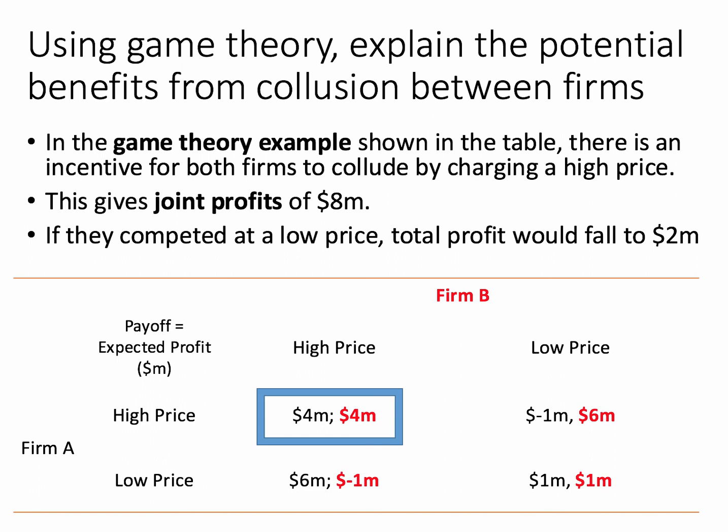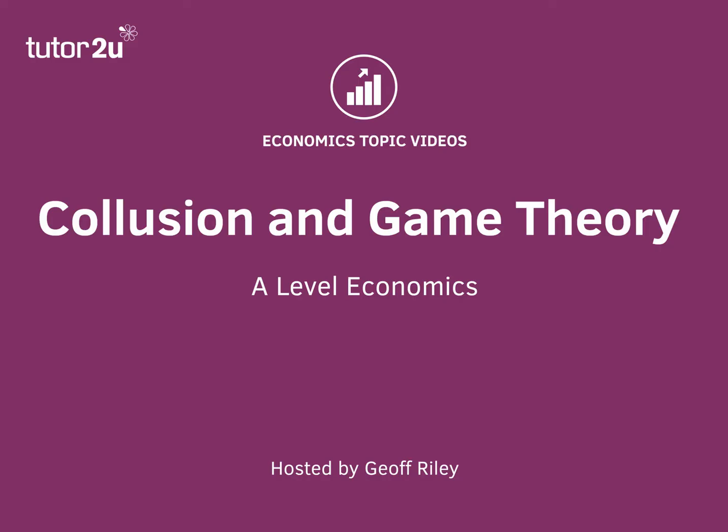But this is a symmetrical situation — the same is true for firm B, and therefore they both have an incentive to charge a low price to avoid a loss. So the collusive equilibrium is beneficial to both firms, but they both have an incentive to cheat on the agreement. This was a short answer video on collusion and game theory.